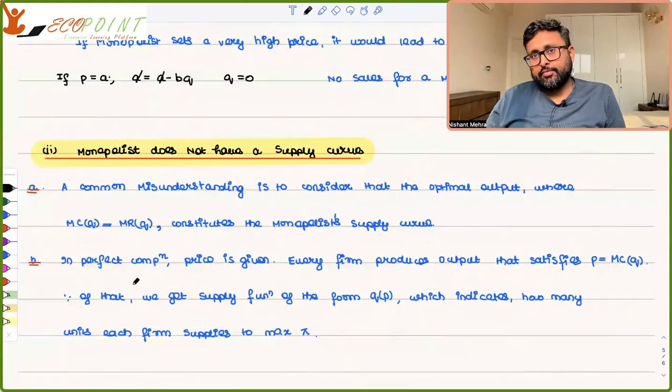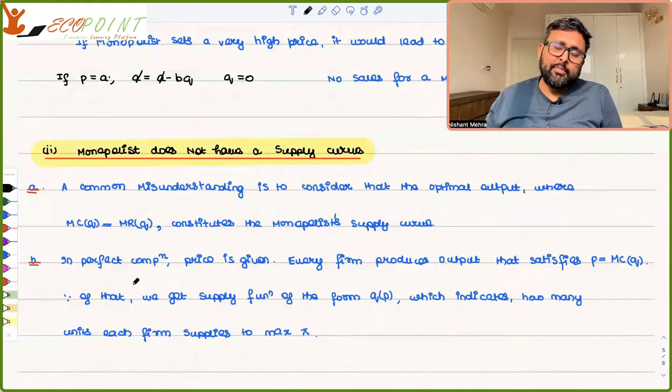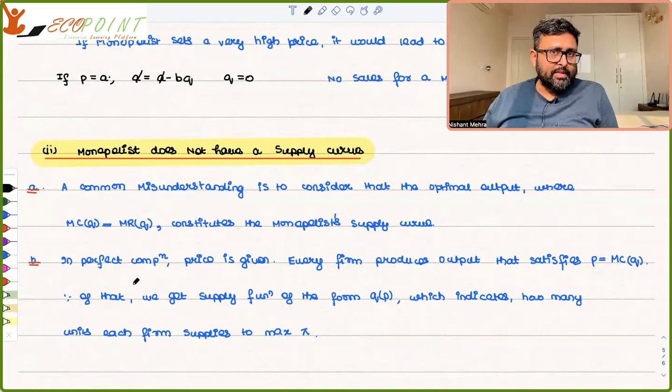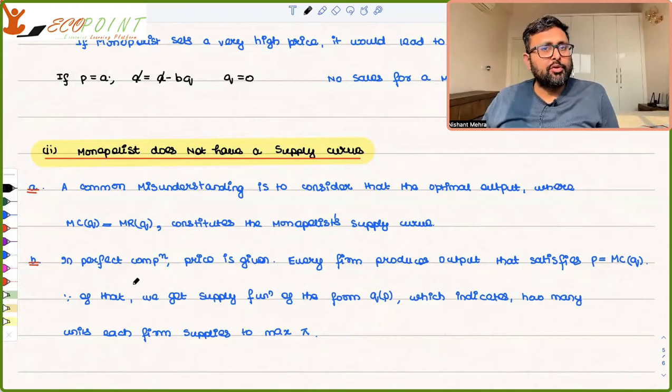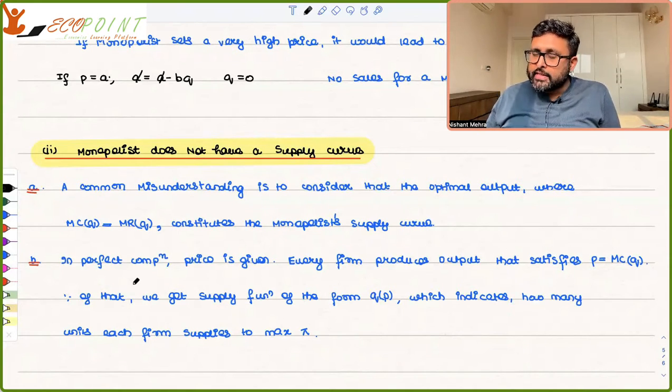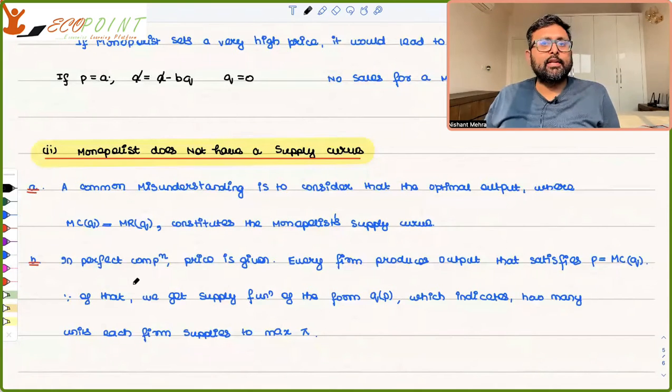Second thing, monopolist doesn't have a supply curve. Generally, the idea is just say in perfectly competitive market, you have P is equal to MC as the supply curve. You also have MR equal to MC as the supply curve. That condition is giving you the supply curve for the monopolist. No, it is not true. In case of perfect competition, there is a one-to-one correspondence between the price and the quantity. We will see that this is not the case under monopolist.